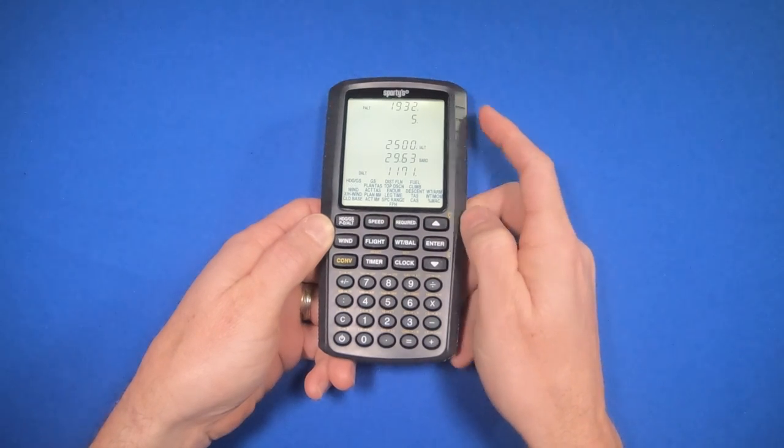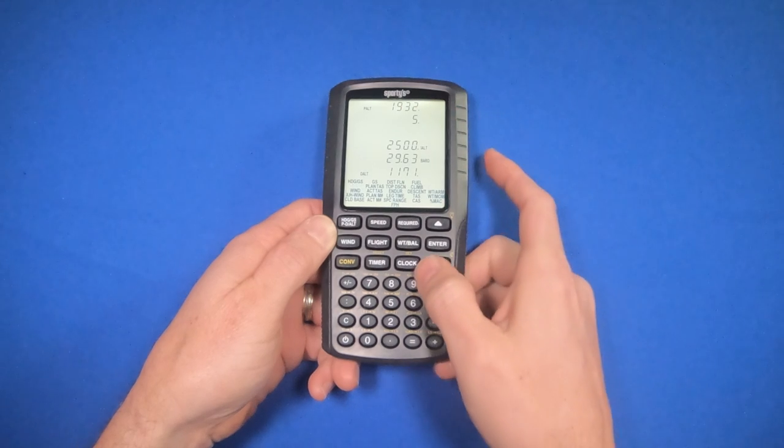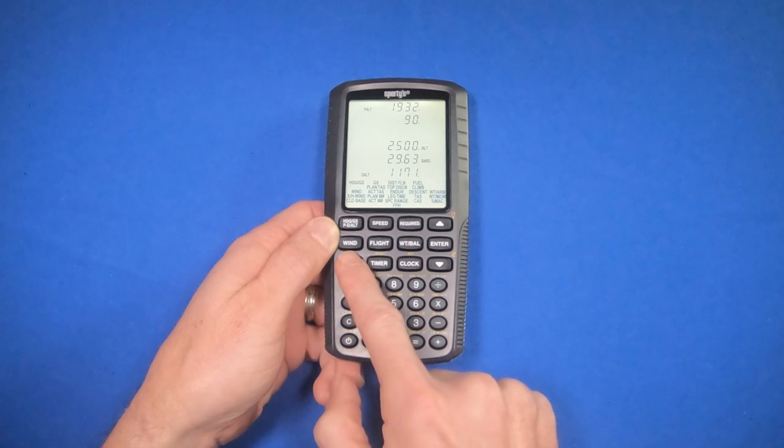For the temperature, we're going to put 90 degrees Fahrenheit. Now you can see it wants it in Celsius, so I can do a conversion here. I'll put in 90, then I can hit the conversion button.